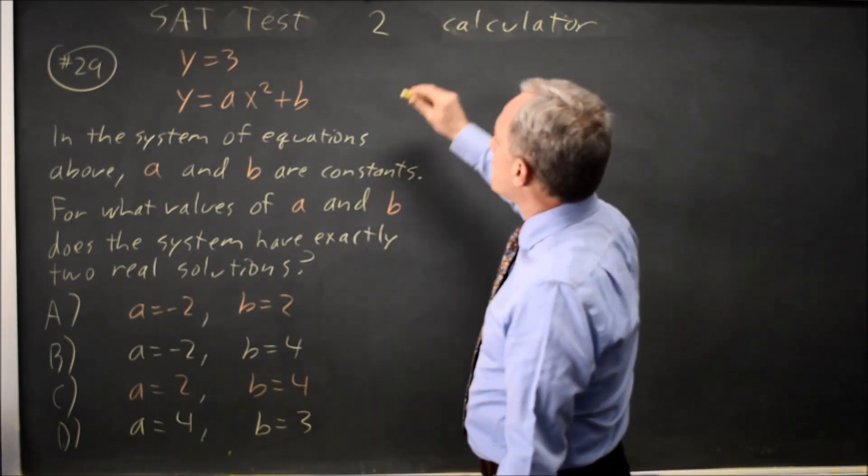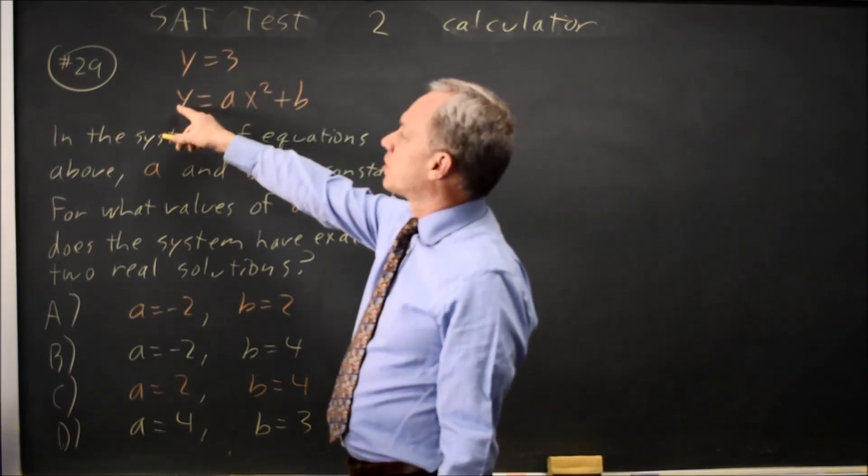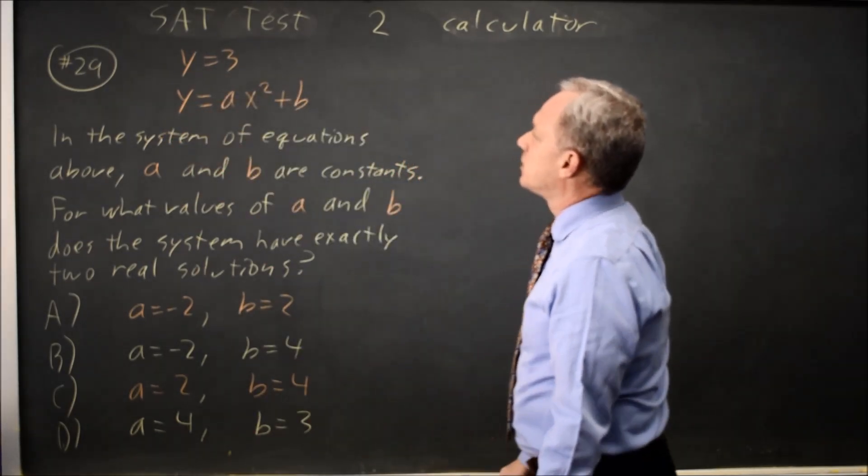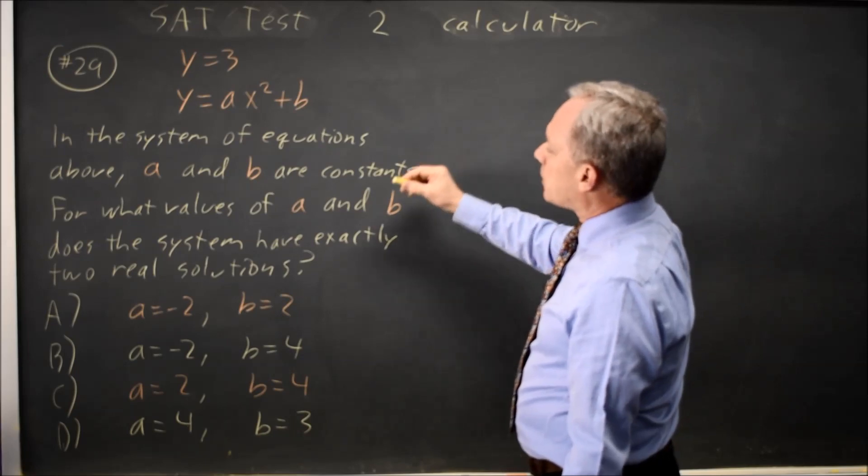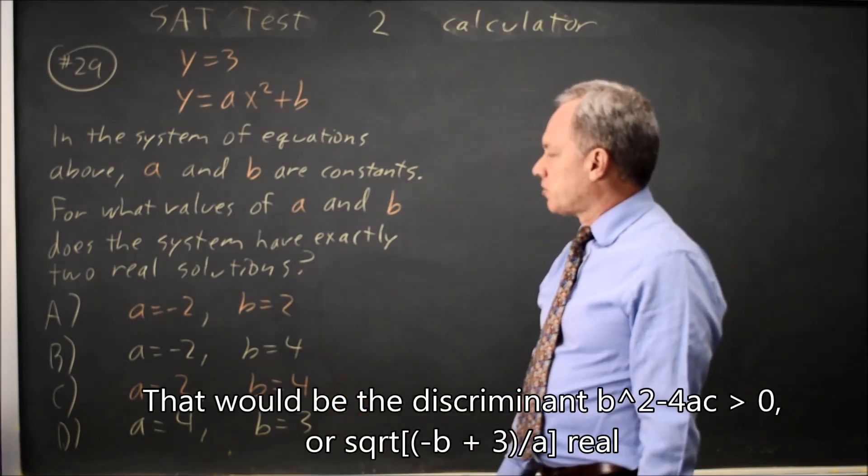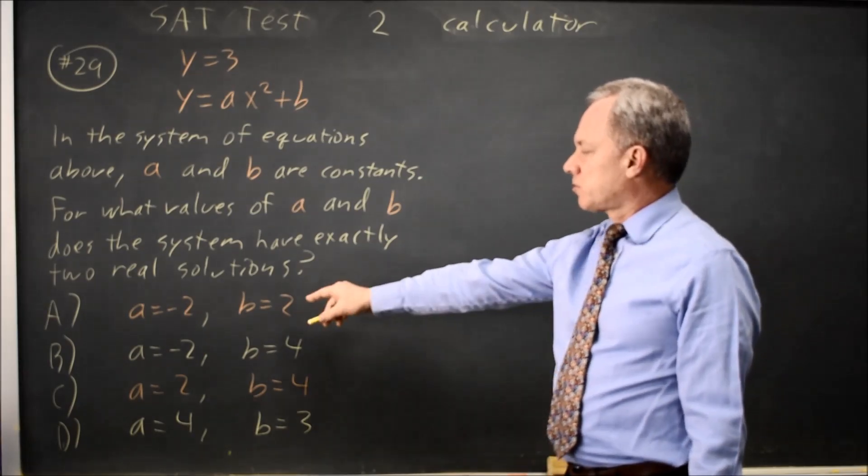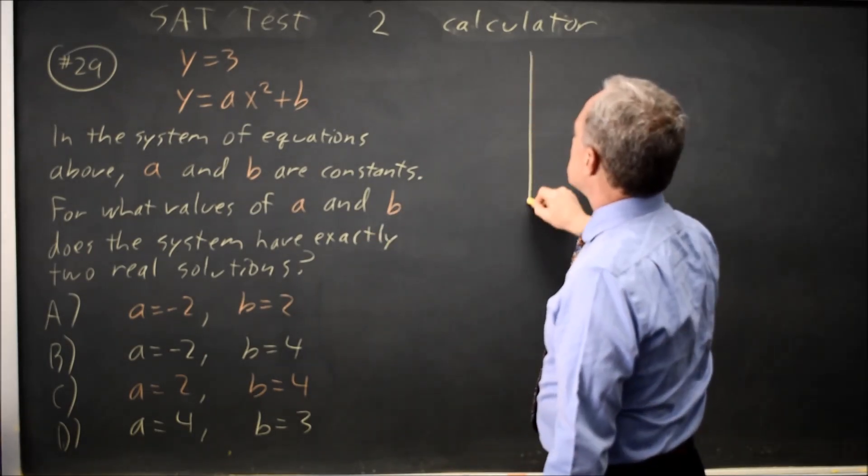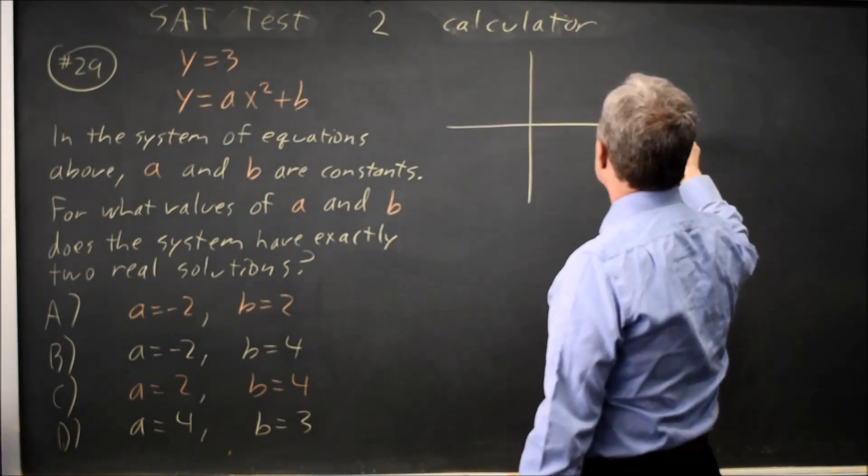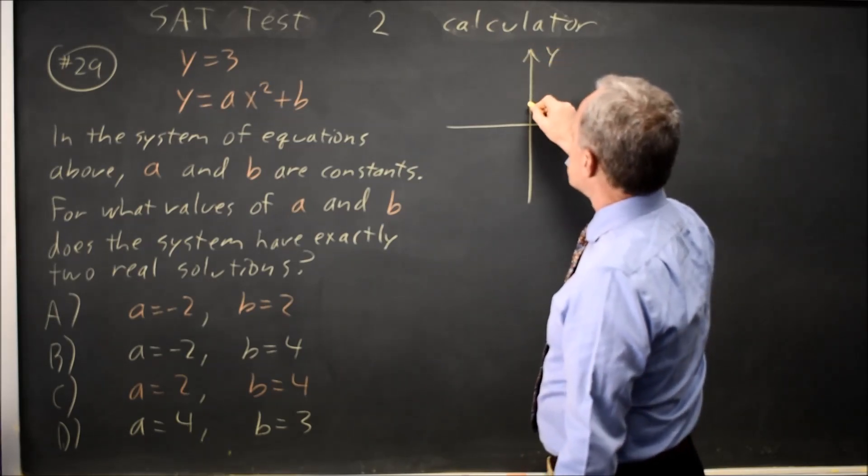I could solve this algebraically if I substitute 3 for Y in the second equation and then I can check which of my choices match that algebraic solution. Or I can just sketch the graphs for each of these choices. And I'll sketch the graphs.